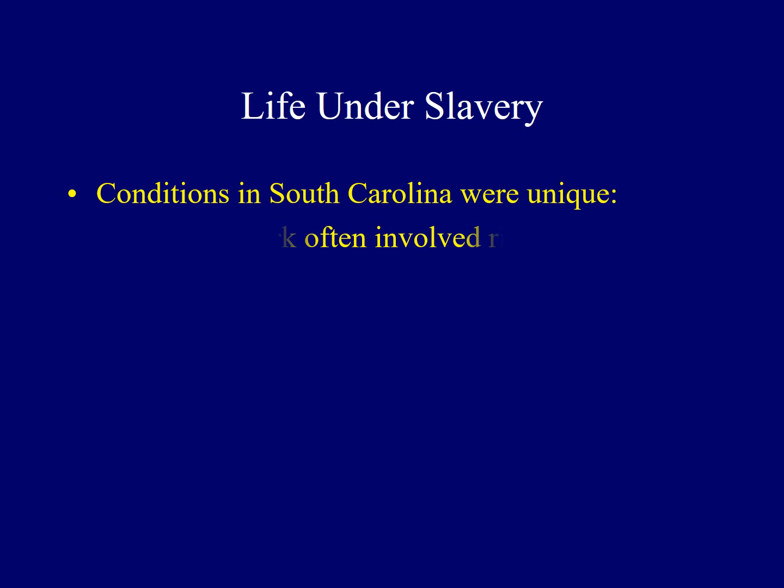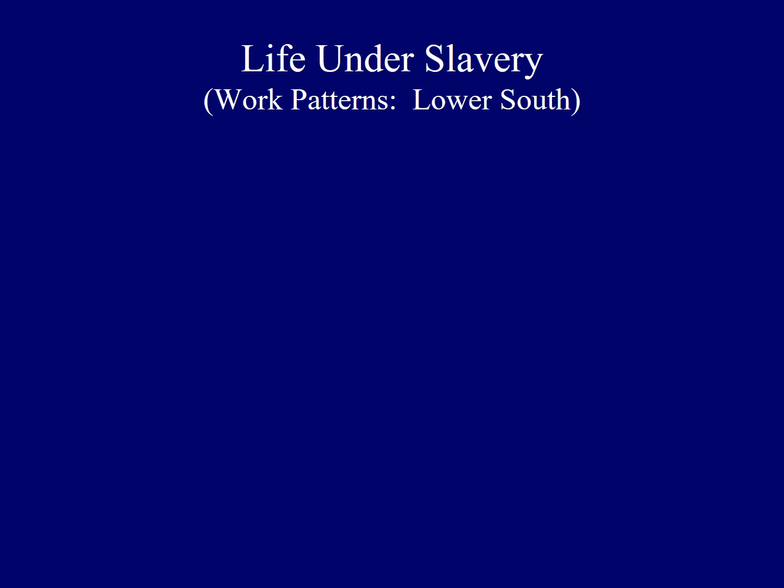Conditions awaiting slaves in South Carolina could be somewhat different compared to those facing Africans in other colonies, due to the huge rice plantations with large numbers of slaves and the fact that blacks outnumbered whites. In the Lower South, and particularly South Carolina, the task system was common. The heat and working conditions were so intense that slaves were given a series of jobs or chores to complete during the course of the day. When finished, one's efforts were done. This allowed slaves some control over the pace of their work, and others even found time to supplement their diet by raising animals or planting small gardens. It often kept slaves isolated from other whites on the plantation.